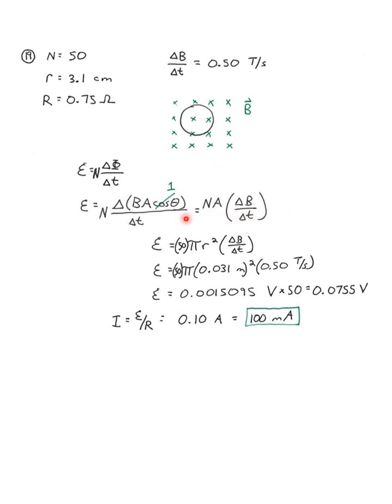So we have the electromotive force is N times the area times the rate of change of the magnetic field. So let's plug in the values. 50 times pi times radius squared times rate of change of the magnetic field. Rate of change is 0.5 teslas per second. We plug all those values in, and we get 0.0755 volts.